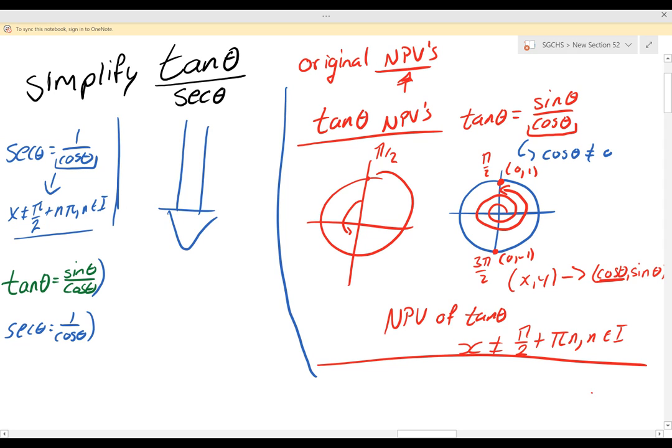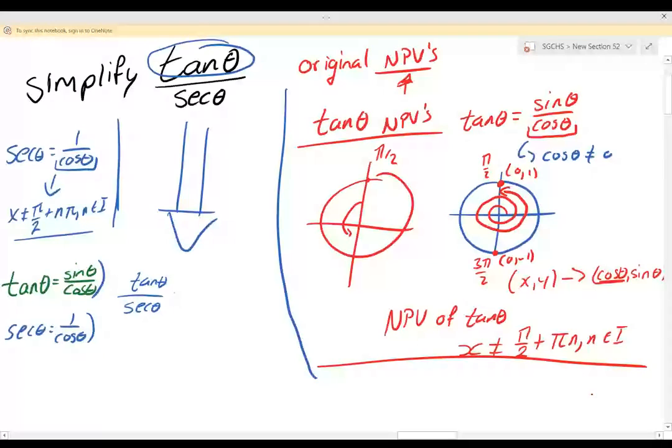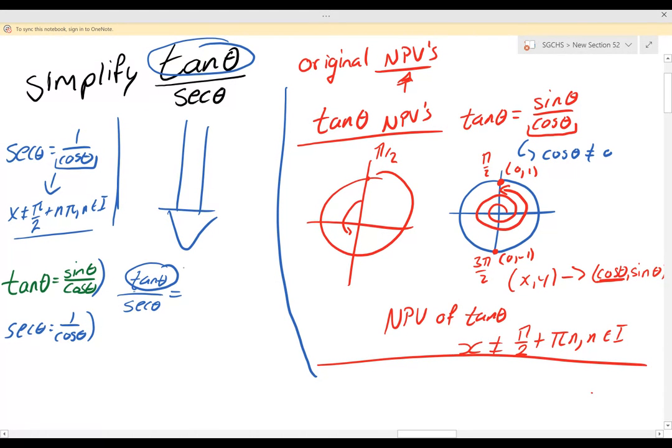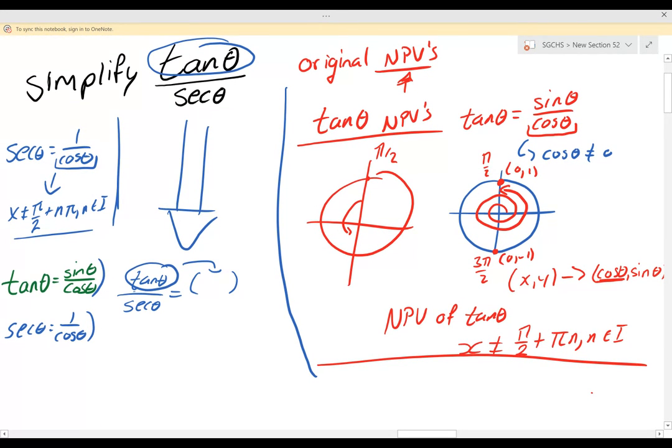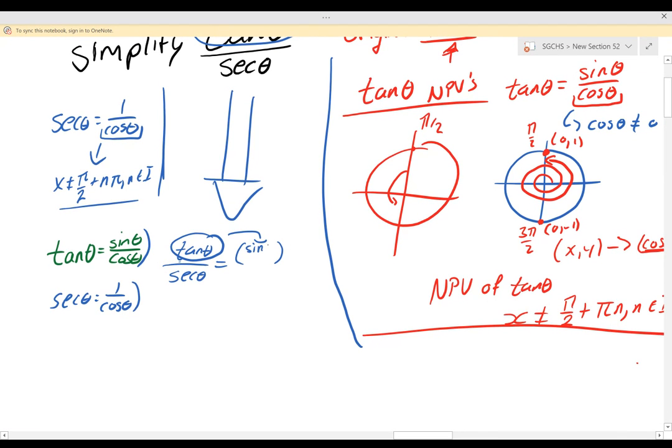I'm going to utilize brackets since I'm dividing different fractions. So I'm going to substitute tan θ in for sin θ over cos θ. So tan θ over sec θ—well tan θ here I'm going to substitute in for sin θ over cos θ.